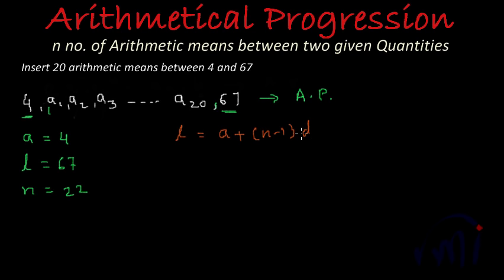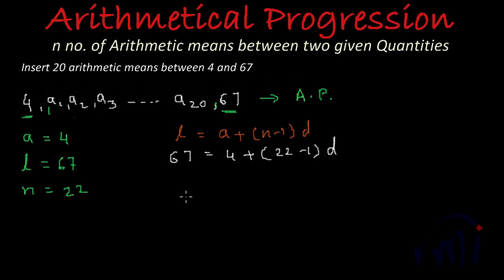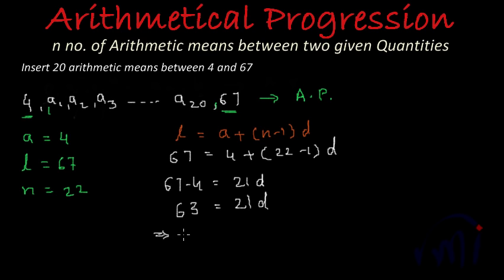By inserting these 20 arithmetic means, we are actually writing a series of 22 terms starting from 4 and ending at 67. The formula of last term for an arithmetic progression is a plus (n minus 1)d. If we can find d, the common difference, we can find all these 20 terms. So: last term 67 equals a which is 4, plus (n minus 1) where n is 22, times d. Solving: 67 minus 4 equals 21d.